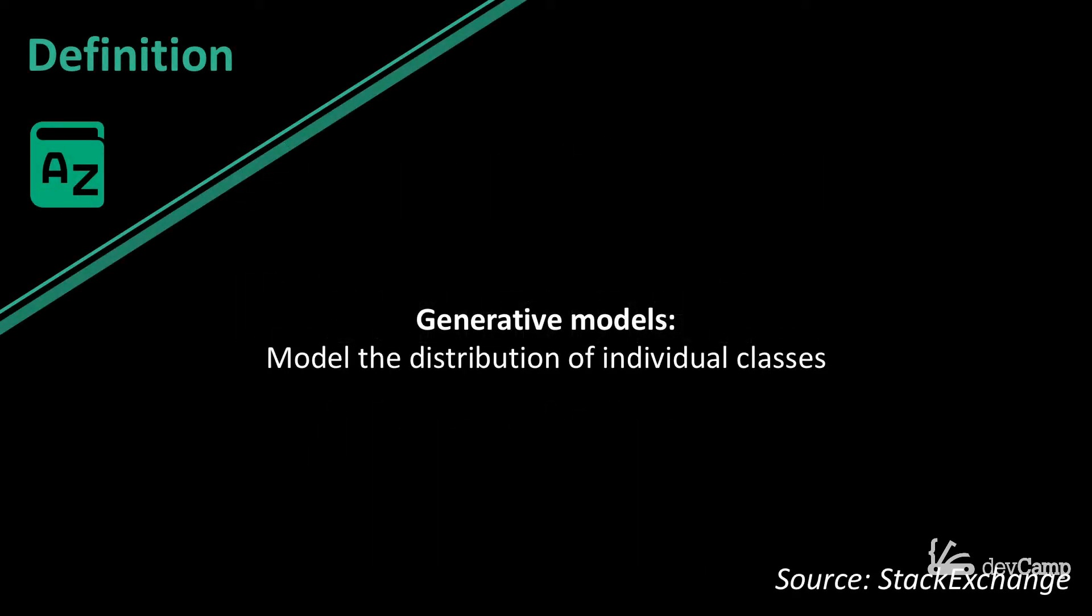Let's look at generative models first. What these types of algorithms do is they model the distribution of individual classes. Imagine that you're building a handwriting recognition system. The way that a generative model would work is it would create a model for every single letter in the alphabet, for every number, and then it would store that model.